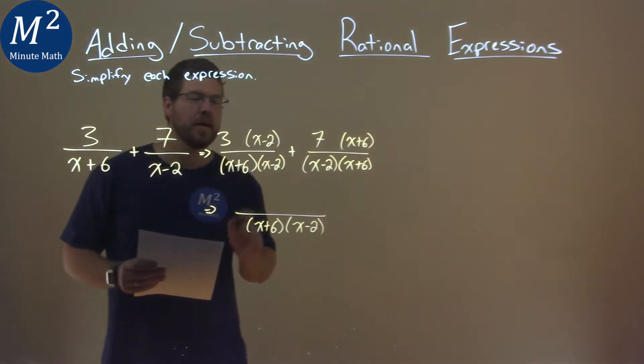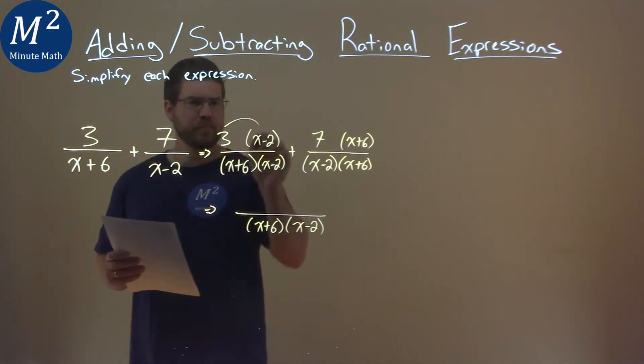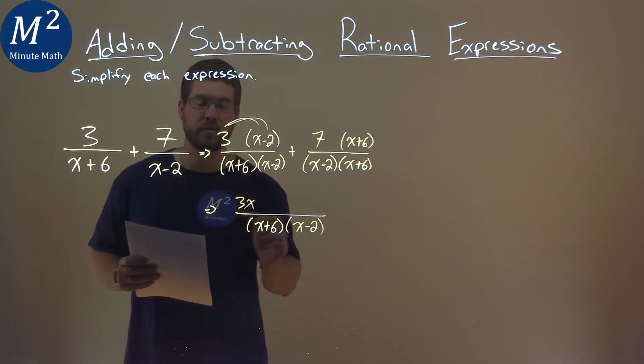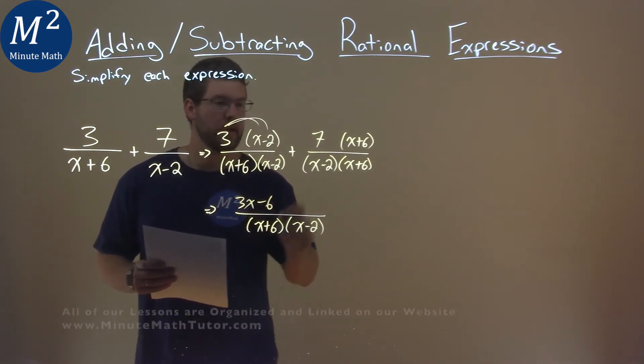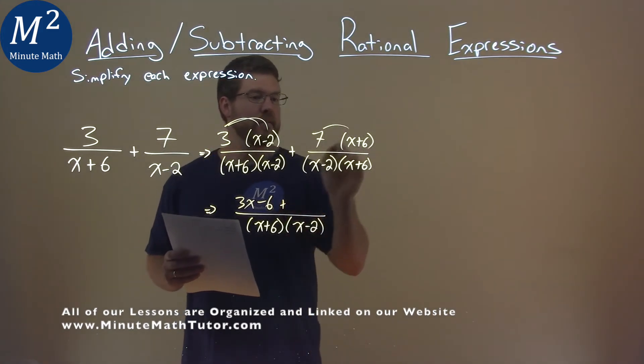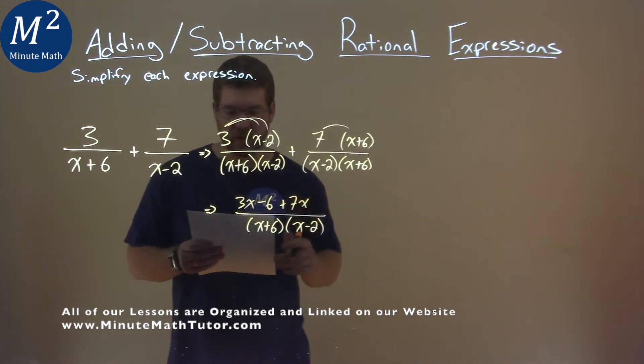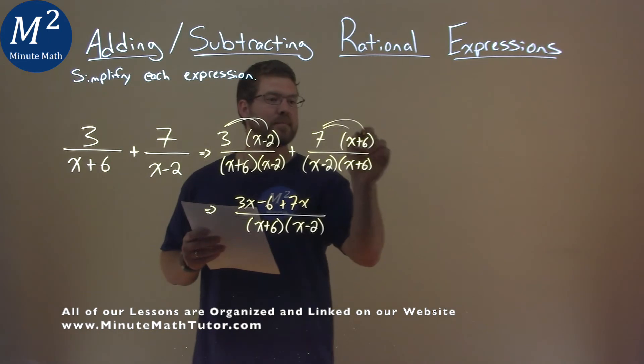and now let's go distribute the numerator. 3 times x is 3x, 3 times minus 2 is minus 6. Now, we add the 7, 7 times x is 7x here, and 7 times 6 is 42.